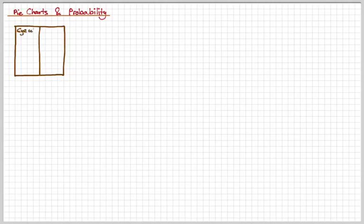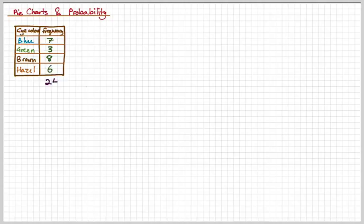Let's say this frequency table is for the eye color of students in the class. We might have blue eyes, green eyes, brown eyes, and hazel eyes. Here's the frequencies. If we add these frequencies up, we get a total of 24.